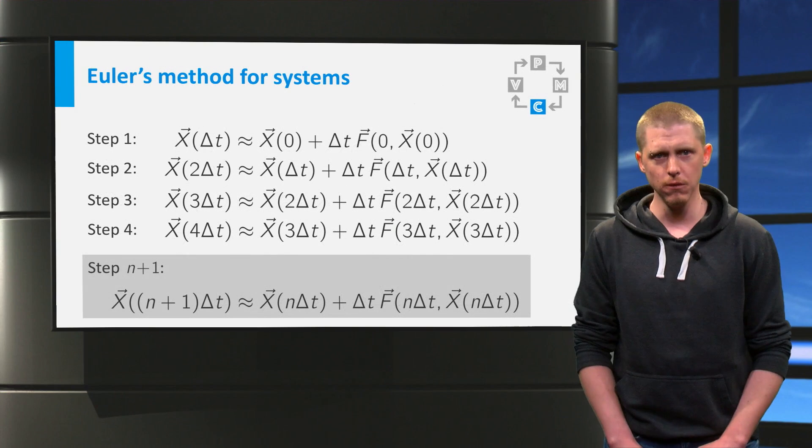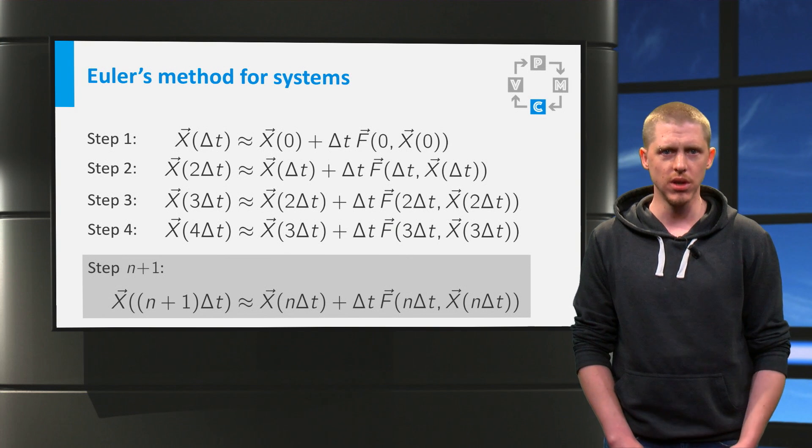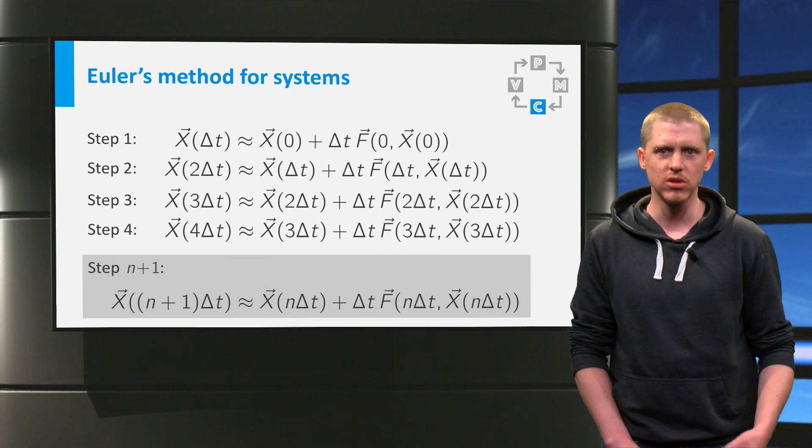If you perform a few steps yourself, you obtain a list of approximations of the vector function x at several consecutive times, all Δt apart.